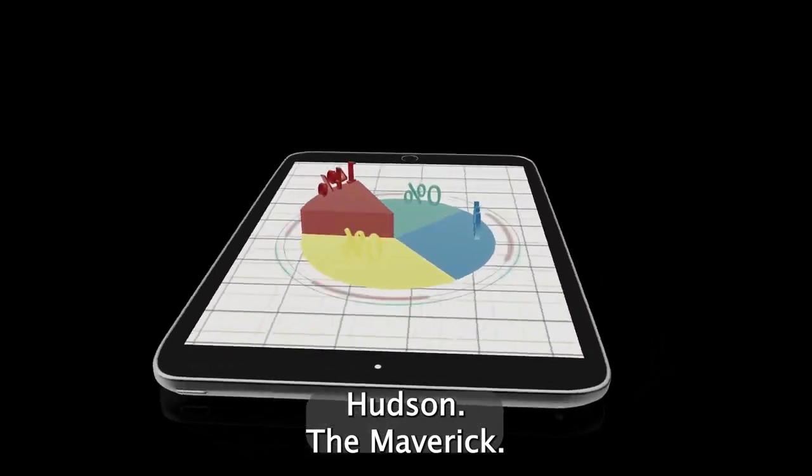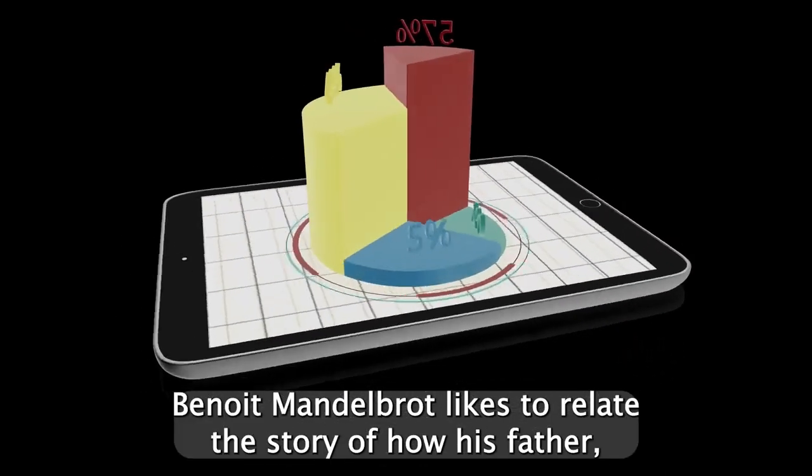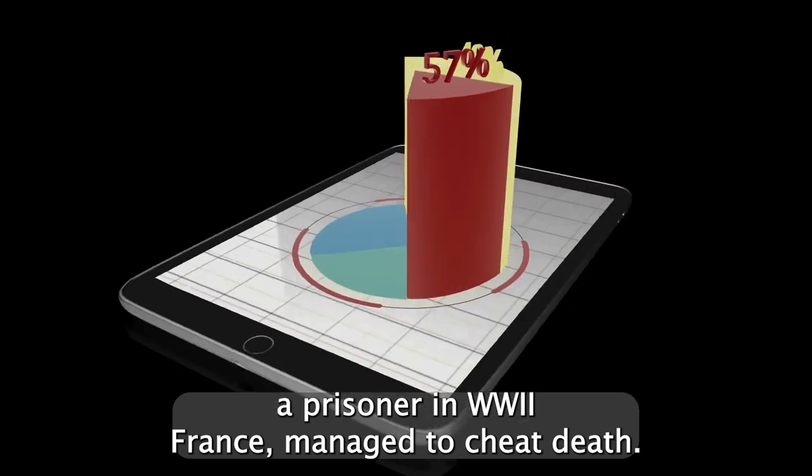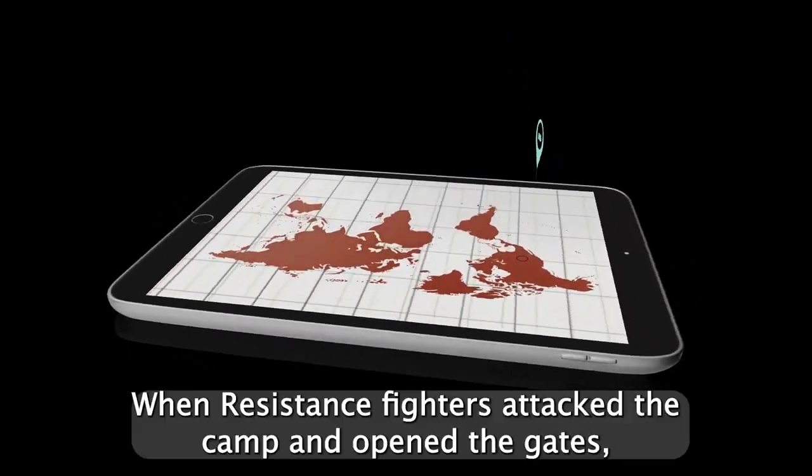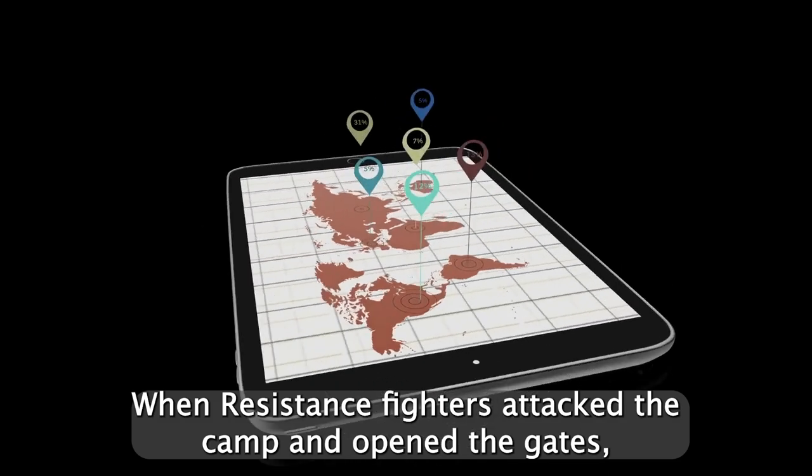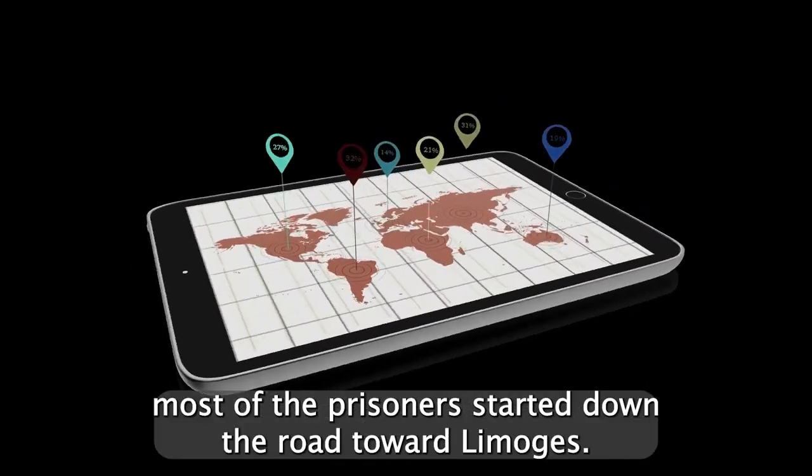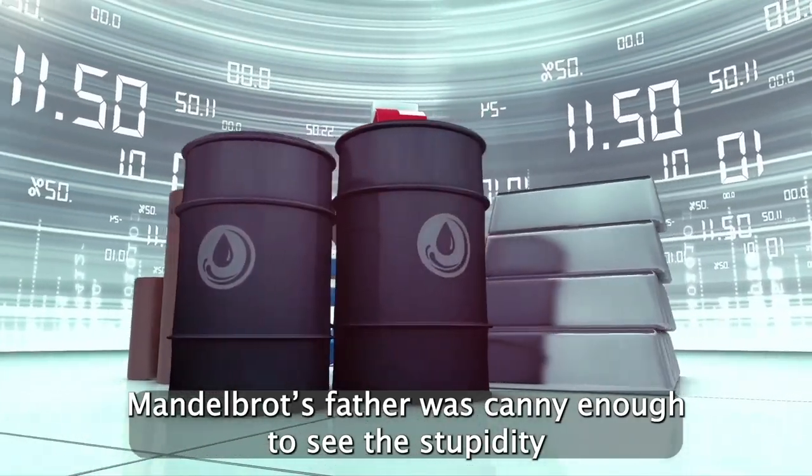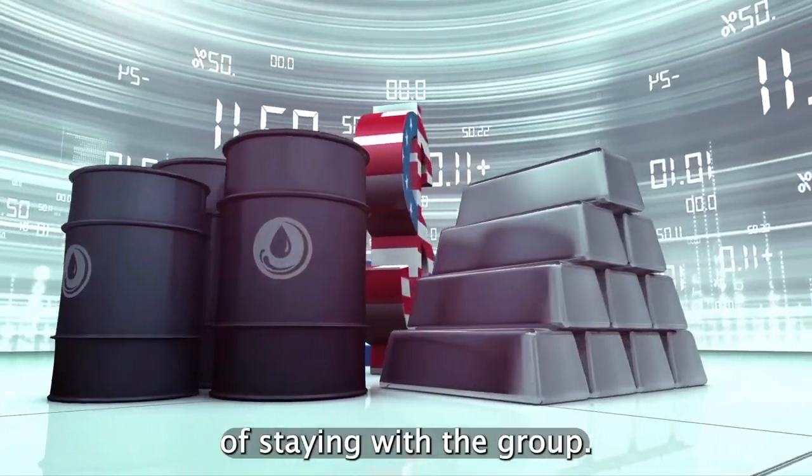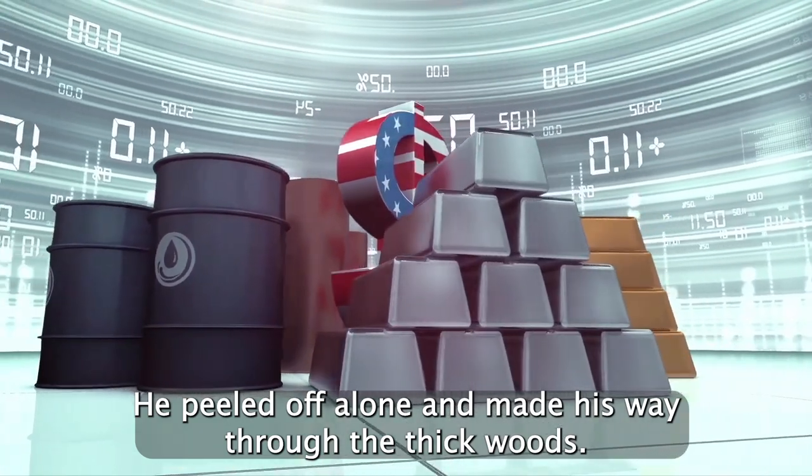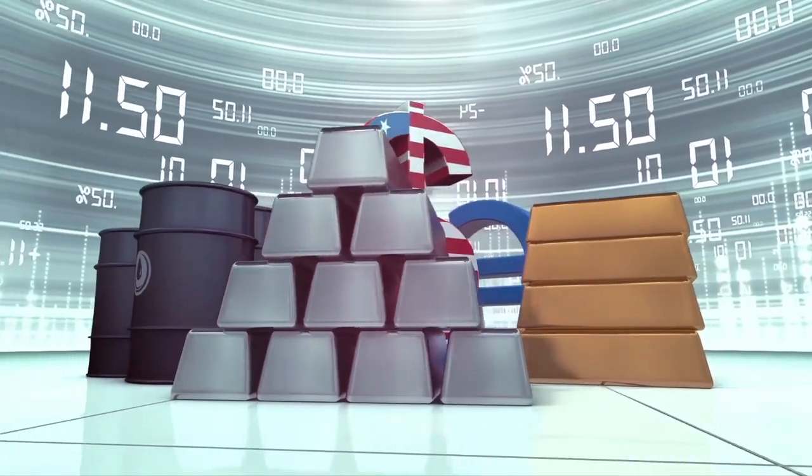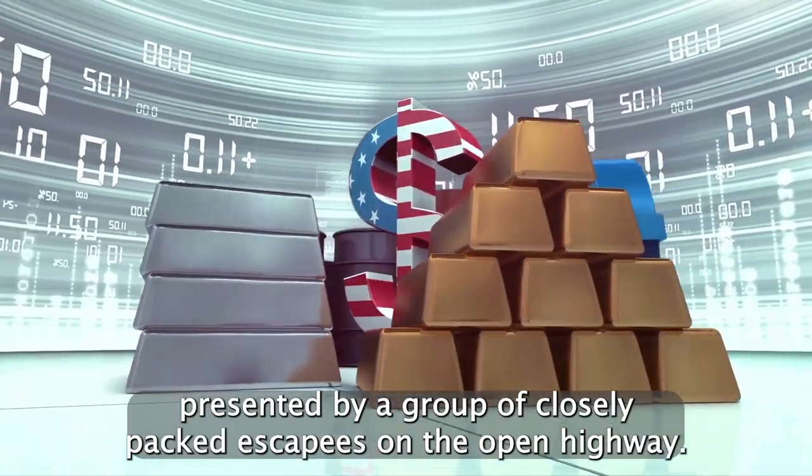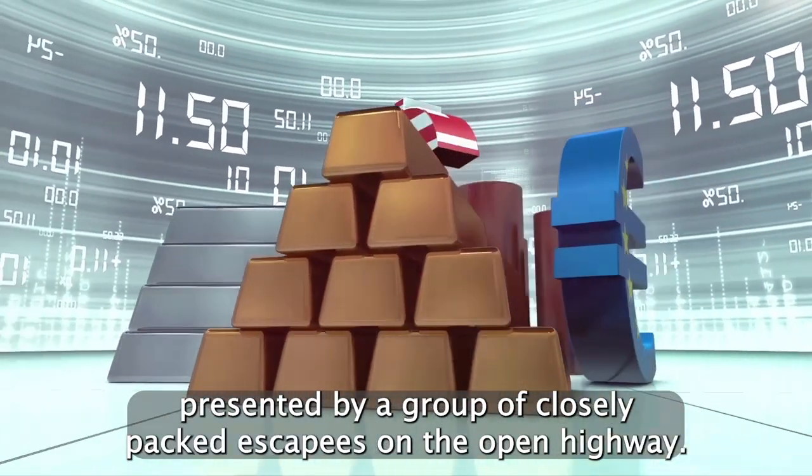The Maverick. Benoit Mandelbrot likes to relate the story of how his father, a prisoner in World War II France, managed to cheat death. When resistance fighters attacked the camp and opened the gates, most prisoners started down the road toward Limoges. Mandelbrot's father was canny enough to see the stupidity of staying with the group. He peeled off alone and made his way through the thick woods. Not long after, a German Stuka bomber strafed the easy target presented by a group of closely packed escapees on the open highway.